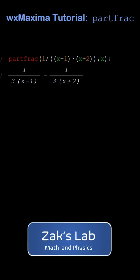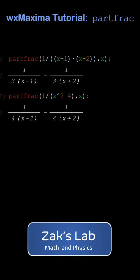There it is — the two undetermined coefficients were one-third and negative one-third. Then we can increase the complexity; using a difference of squares, wxMaxima factors that and computes the partial fractions decomposition.